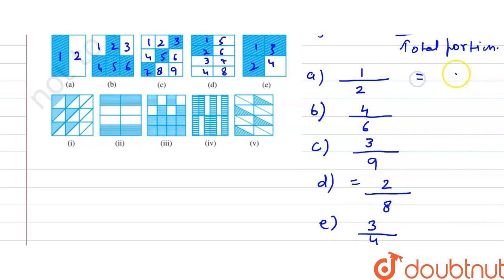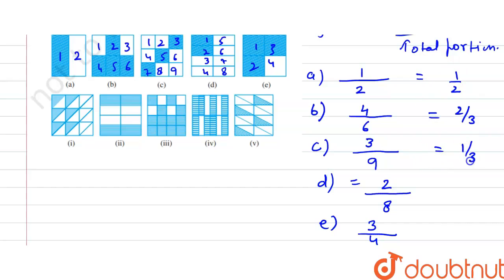So the fractions from the first row are: A is 1/2, B is 2/3, C is 1/3, D is 1/4, and E is 3/4.